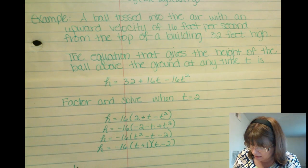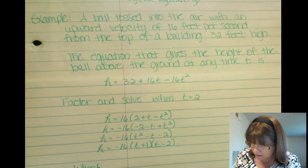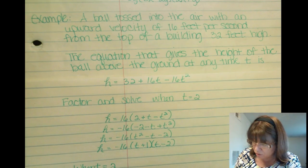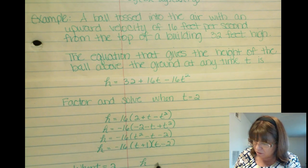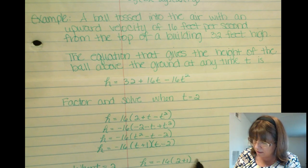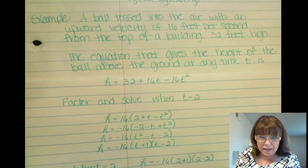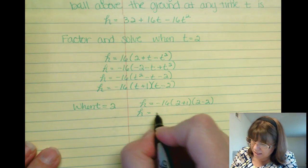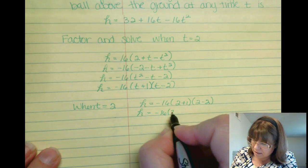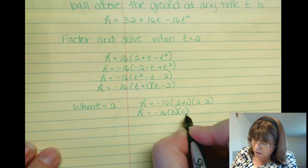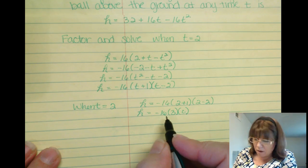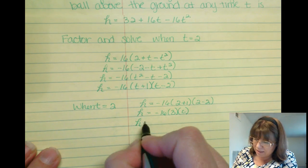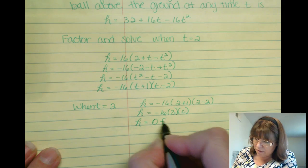So when t equals 2, our equation becomes h is negative 16 times 2 plus 1 times 2 minus 2. h equals negative 16 times 3 times 0. But anything times 0 is going to be, our height is 0 feet.